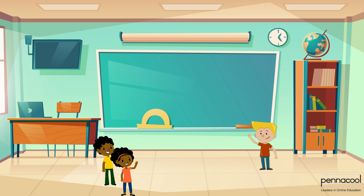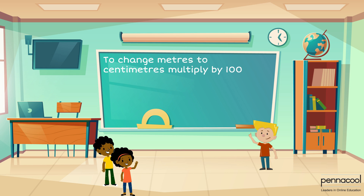Julian begins to show the class how to convert measurements from one unit to the next. When changing a measurement from meters to centimeters, one must multiply by 100. The length of his father's van is 5 meters. To represent the length in centimeters, he multiplies by 100, giving a length of 500 centimeters.